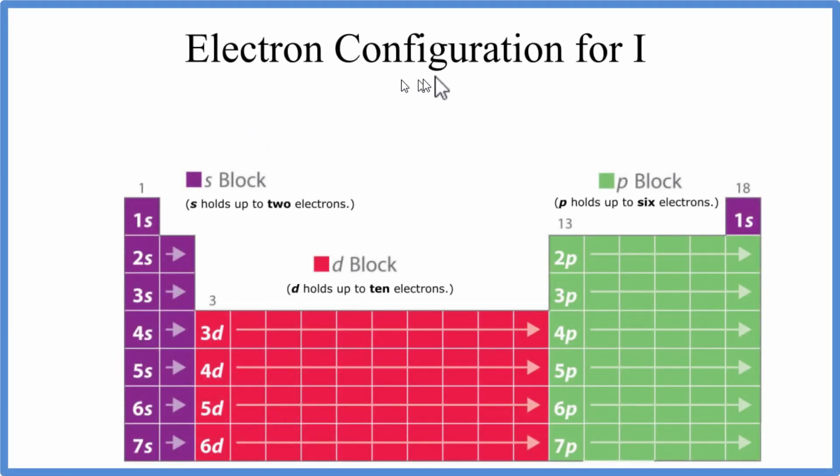To write the electron configuration for iodine, we need to go to the periodic table and look up iodine. So here's iodine on the periodic table. You can see that the atomic number is 53. That means there's 53 protons.